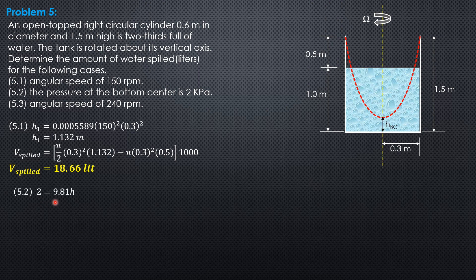So 2 kilopascals equals gamma of water, the specific weight of water, times HBC. HBC is 0.2039 meters. That means the height of this paraboloid is 1.5 minus 0.2039, which equals 1.296 meters, which is again greater than 1. Therefore, a certain amount of water will be spilled.